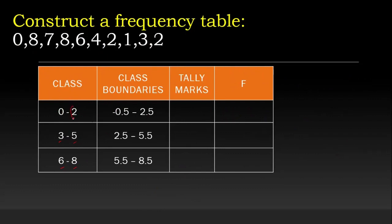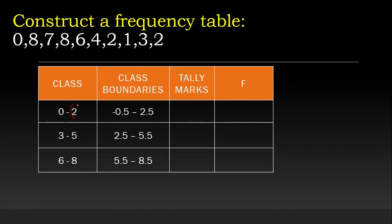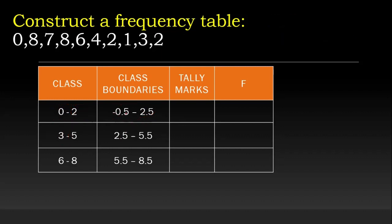To make class boundaries, take the upper limit of one class and the lower limit of the next — for example, 2 and 3. The difference is 3 minus 2 equals 1, divided by 2 gives 0.5. Subtract 0.5 from the lower limit and add 0.5 to the upper limit. This converts inclusive class intervals to exclusive class intervals. So the boundary becomes −0.5 to 2.5.